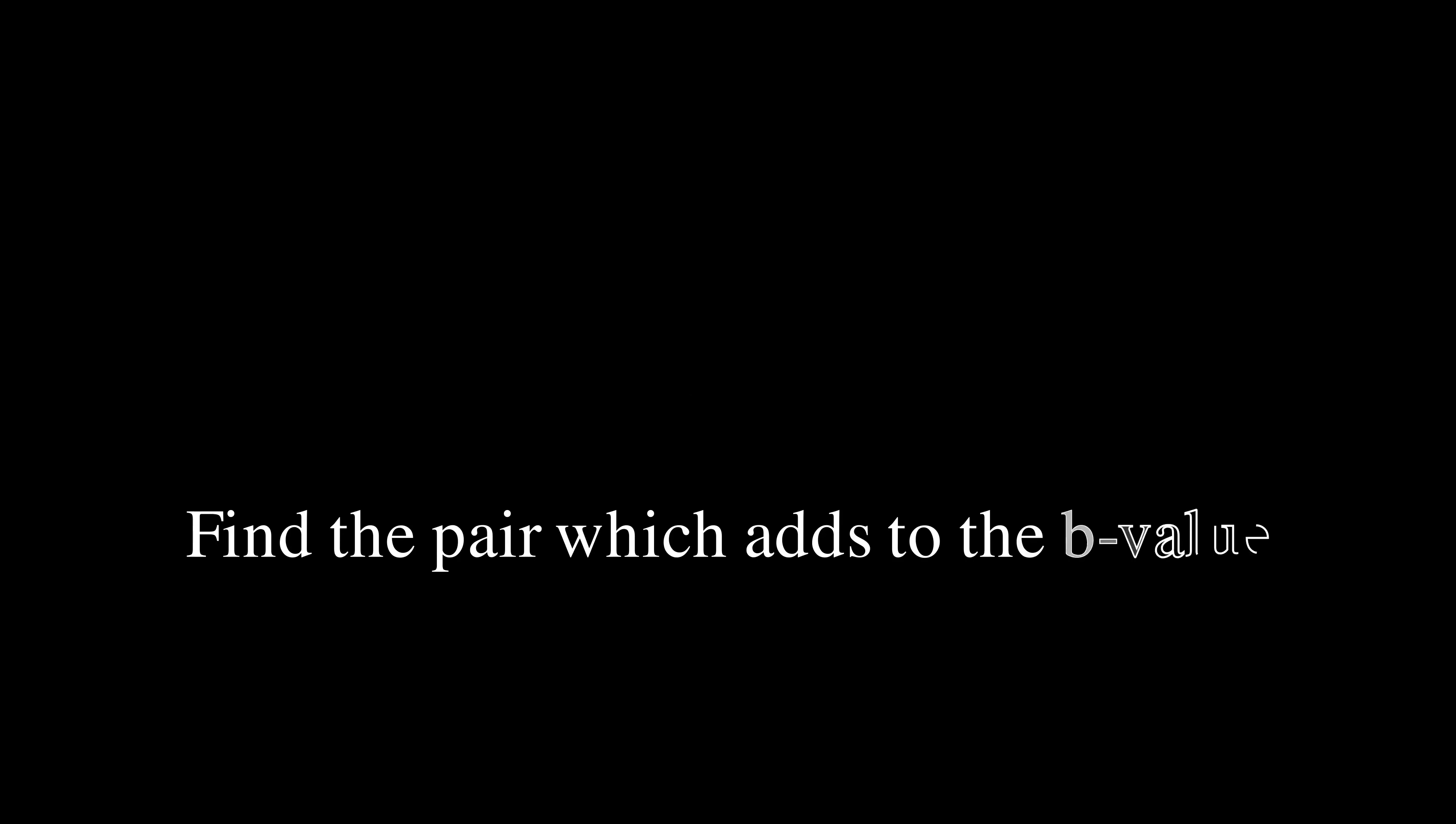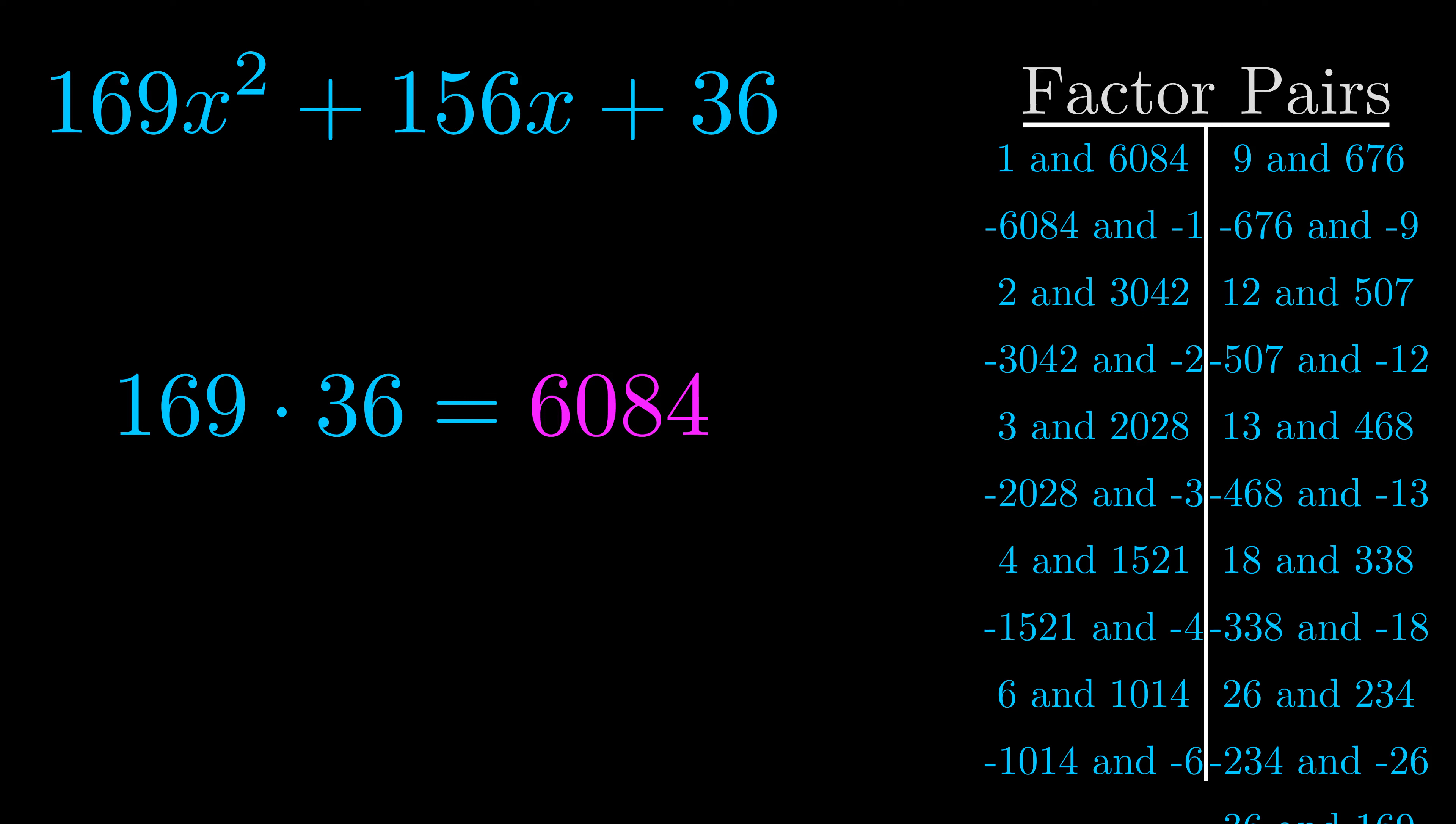The b value is the coefficient on the x term. That's the middle term, the one that we haven't done anything with yet. And really this is the only factor pair that we need.